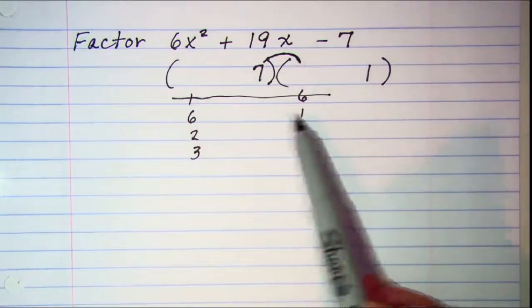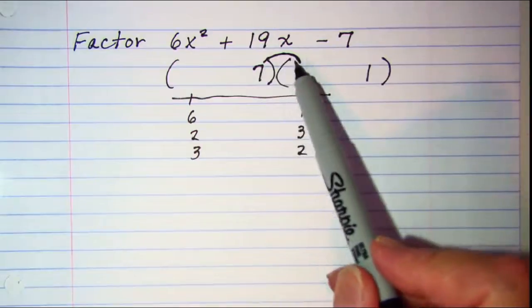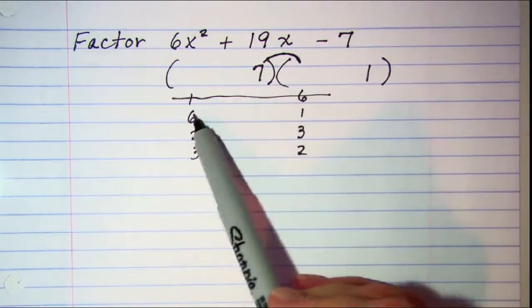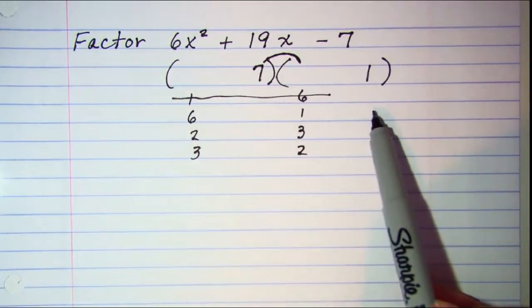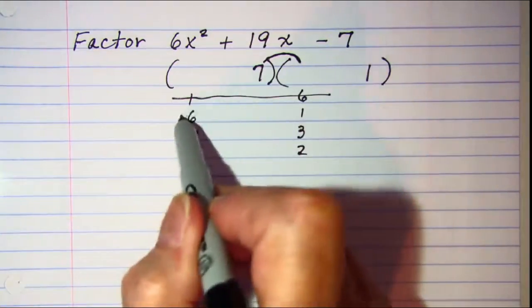For the 6 and 1 choice, I have an inner product of 7 times 1, which is 7. An outer product of 6 times 1, which is 6. That difference is 1, so that one won't work either.